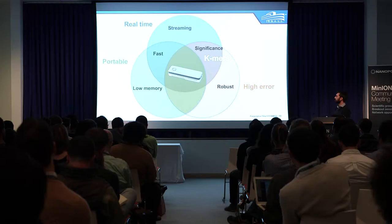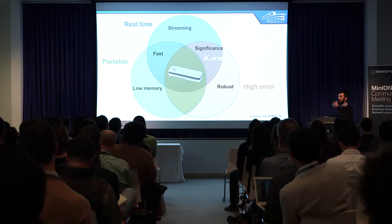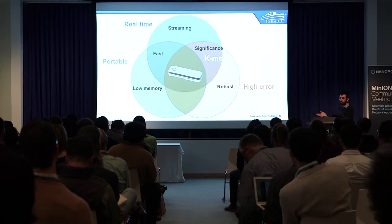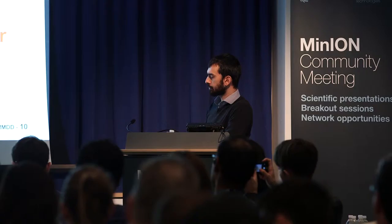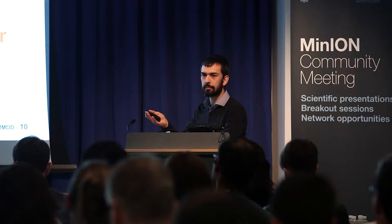So k-mers kind of fall here: you can get significance, the statistics are well studied, and they're certainly robust to error rates. You can stream them and update those tables in real time if you want. But they're not quite fast enough, and more importantly, the memory — if you're storing every k-mer in a sequence, you have huge tables and it takes up a lot of memory.